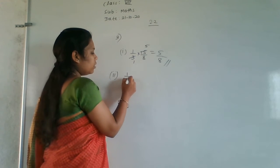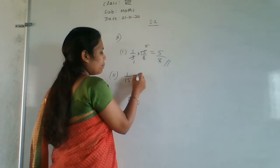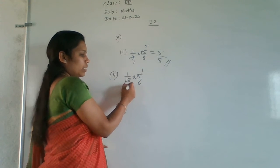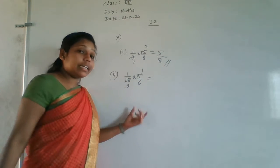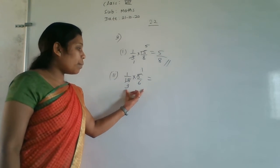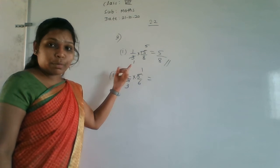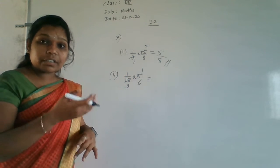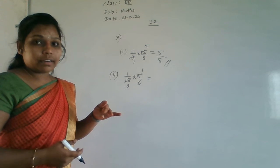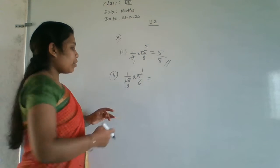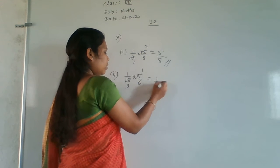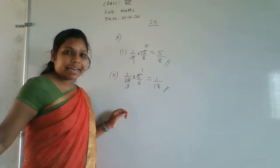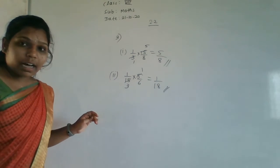Second question: 1/15 × 5/6. Cancel 5 and 15: 5 goes into 15 three times. We cannot divide numerator by numerator or denominator by denominator — only cross-cancel numerator with denominator. After cancellation: 1 in numerator, 3×6=18 in denominator. Answer is 1/18.